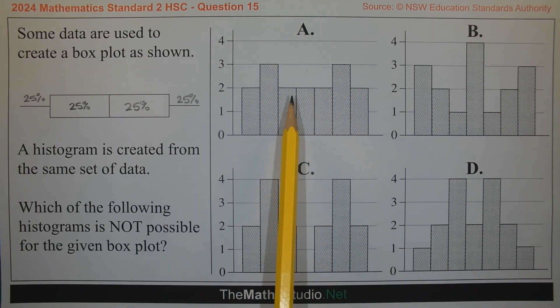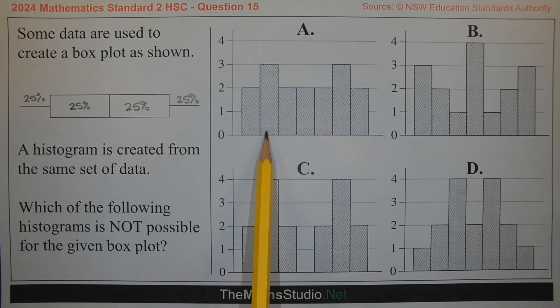So if we take option A, we can see a concentration of data here and here given the taller columns here and here.